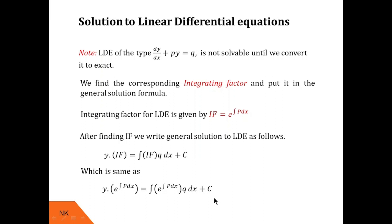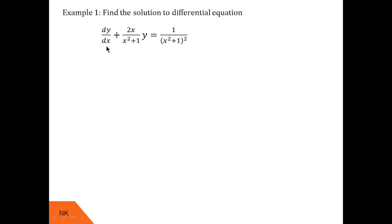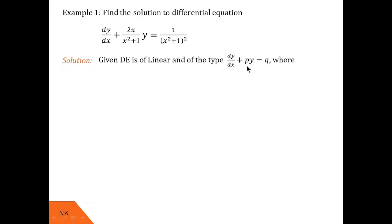Now let me show you some real examples. The question is to solve the differential equation dy/dx + (2x)/(x² + 1) · y = 1/(x² + 1)². Here y is the dependent variable, x is the independent variable, and y and its derivative appear in degree 1 — therefore this is a linear differential equation. Comparing with the standard form dy/dx + Py = Q, we get P = 2x/(x² + 1) and Q = 1/(x² + 1)².